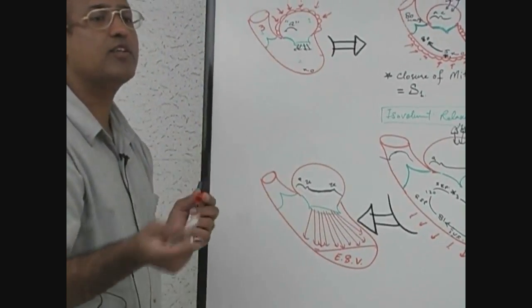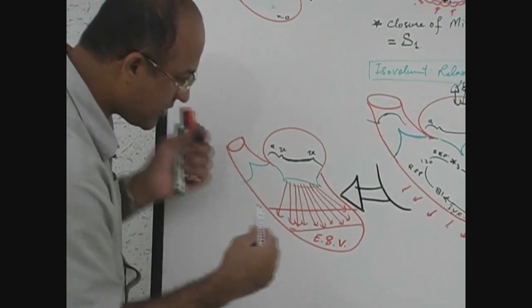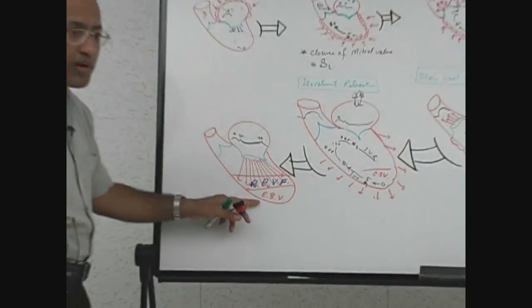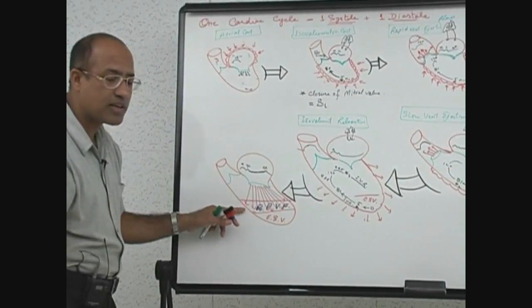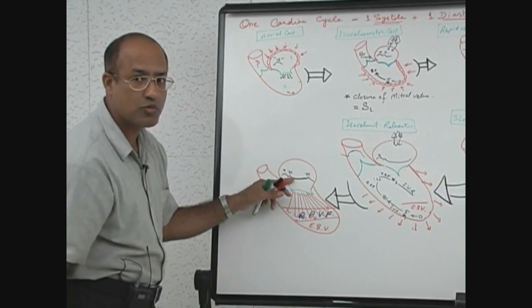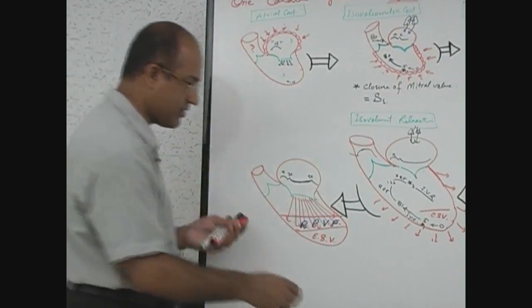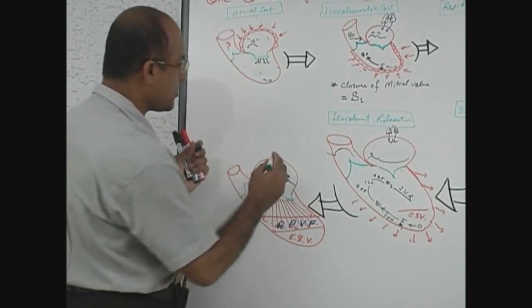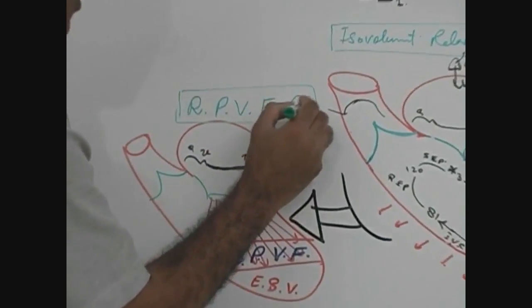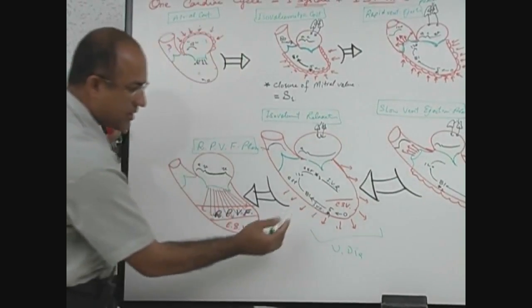Even though this is rapid filling, it is passive filling because atria are not contracting. So we call it rapid passive ventricular filling. The ventricle had some blood left over from the previous contraction, and as soon as the mitral valve opened, accumulated blood rapidly rushed into the ventricle. This phase is the rapid passive ventricular filling phase, and it is also part of ventricular diastole.